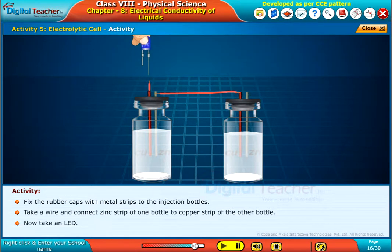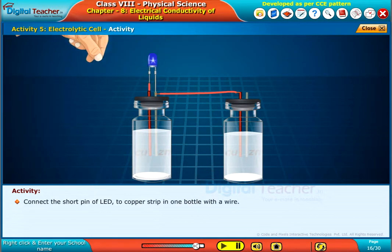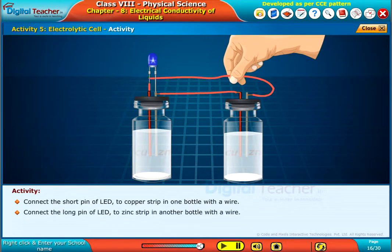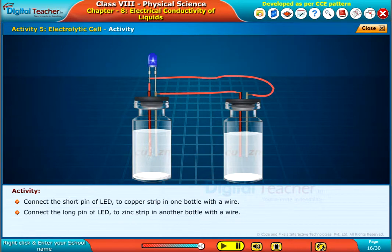Now take an LED. Connect the short pin of LED to copper strip in one bottle with a wire. Connect the long pin of LED to zinc strip in another bottle with a wire.